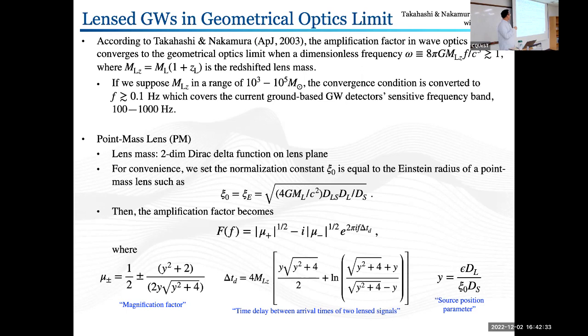Adopting gravitational lensing in the geometric optics limit with this point mass lens model, we can write the amplification factor in integral form, where mu plus and minus are the magnification factors, and delta T means the time delay between the arrival times of the two lensed signals. This equation shows that two lensed images or lensed signals can be produced by the lens system.